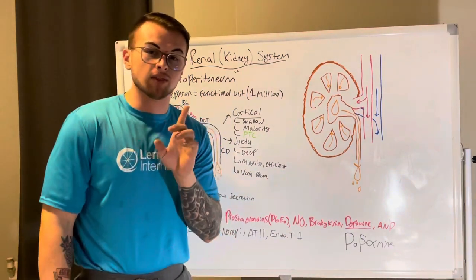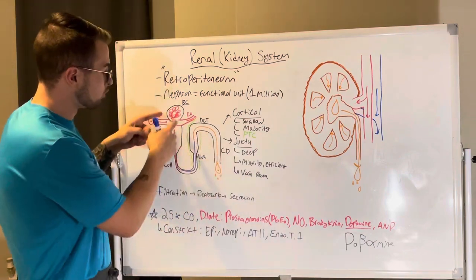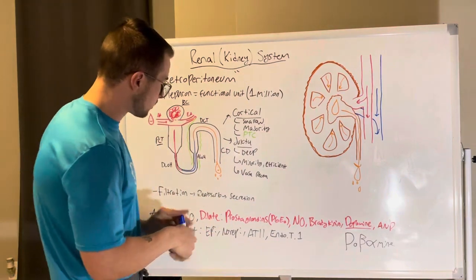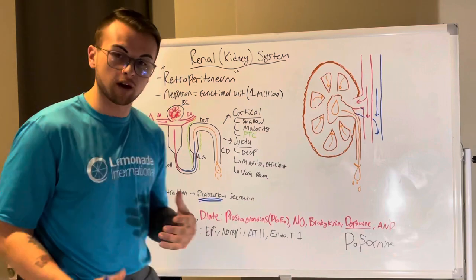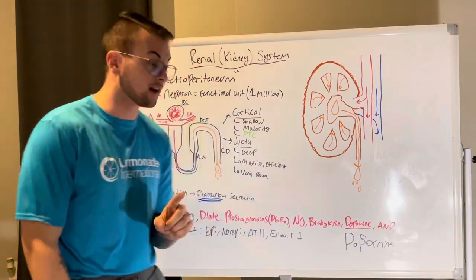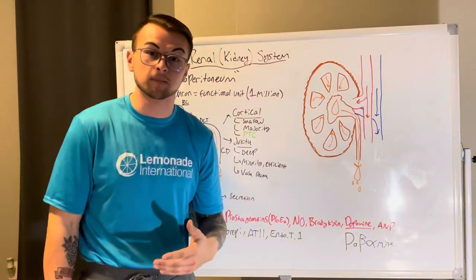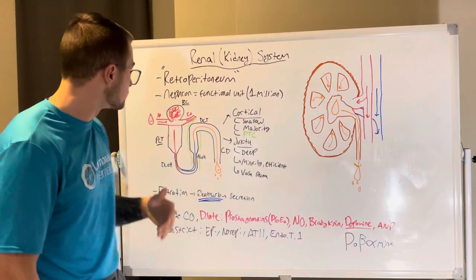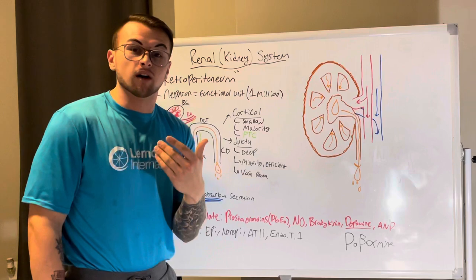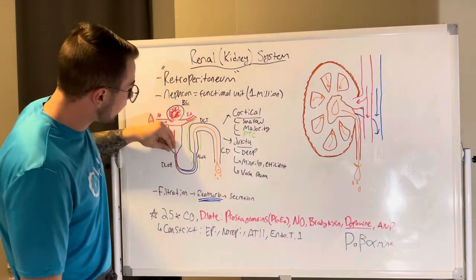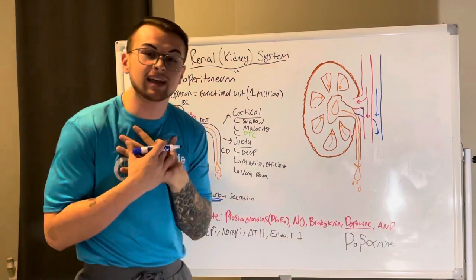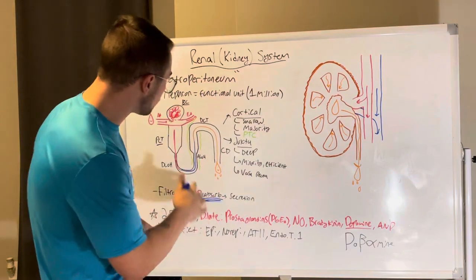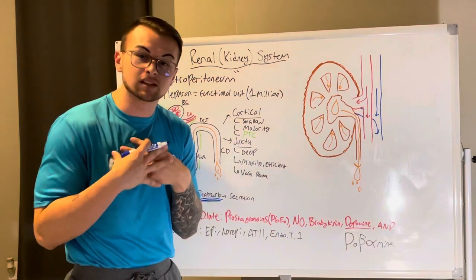Reabsorption and secretion happen all throughout the tubule. When you think of reabsorbing, think of sucking fluid back. The peritubular capillaries and vasa recta do this. We're reabsorbing substances we want to keep — like glucose, water, and solutes like potassium and sodium — taking them from the nephron back into the blood and body.